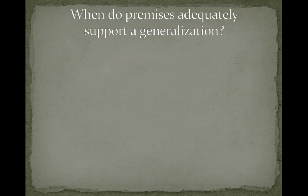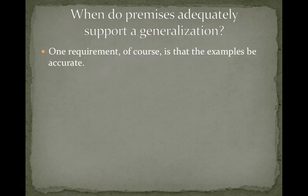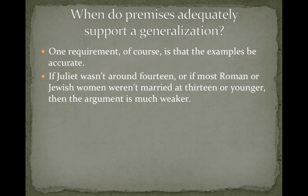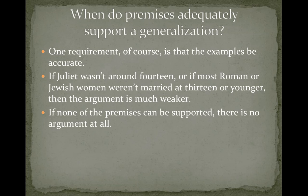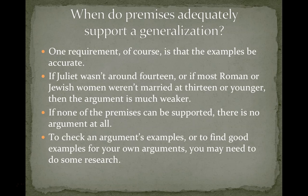The question to ask yourself when using arguments that involve generalizations is: when do premises adequately support generalizations? One requirement is that your examples are accurate. If Juliet wasn't around 14, or if most Roman or Jewish women weren't married at 13 or younger, then this argument is much weaker. If none of the premises can be supported, there's no argument at all. So to check an argument's examples, or to find good examples for your own arguments, it's important to do research — not just sometimes, but all of the time.